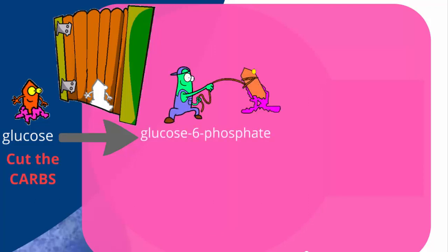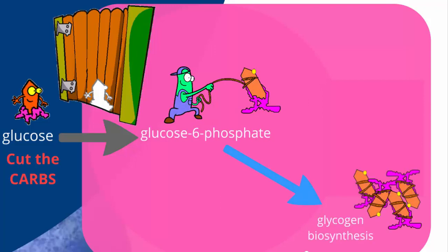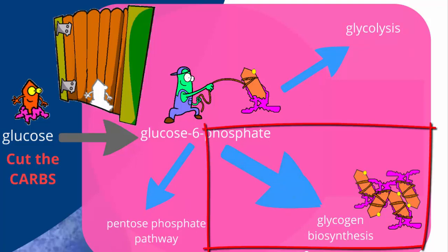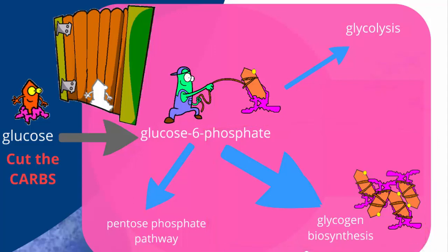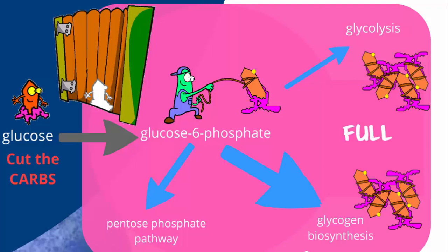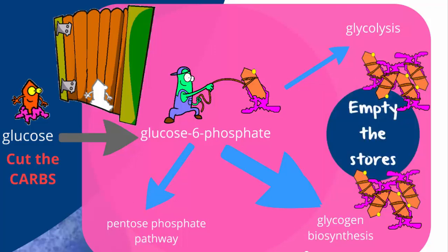The glucose that enters a cell has a couple of options: it can be stored as glycogen, used in the pentose phosphate pathway, or split to generate energy. Storing it stops glycolytic flux. The amount of glucose stored by any given cell is finite — when the cupboard is full, it's full. You can't necessarily pack more in, but you can empty the cupboard on a regular basis.